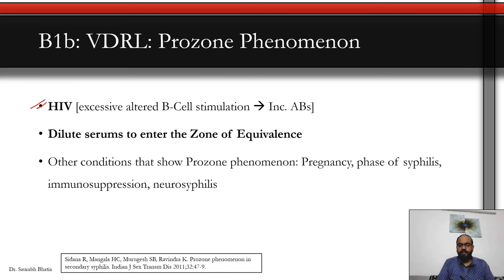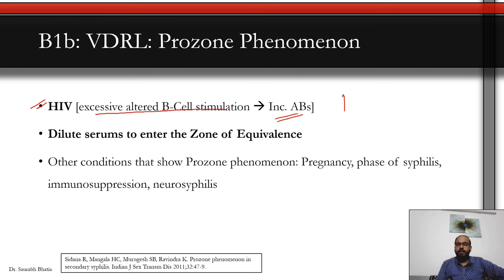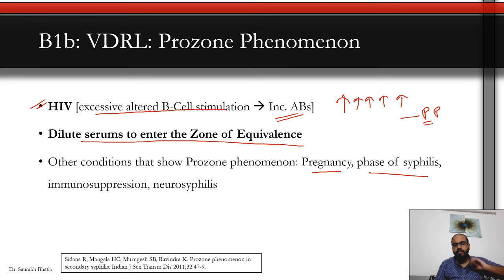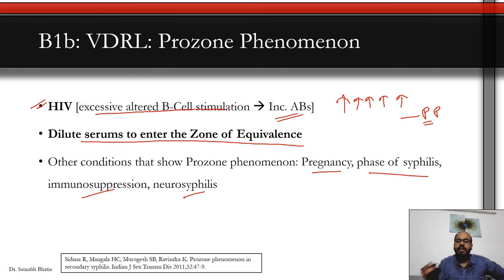Prozone phenomenon is most commonly seen in syphilis with HIV, where excessive altered B-cell stimulation produces high antibody concentrations that interfere with the VDRL test. Other conditions causing prozone: pregnancy, early syphilis (high initial antibody bombardment), immunosuppression, and neurosyphilis (where treponemes in CSF continuously generate antibodies that leak into serum but antigens in blood are relatively fewer).